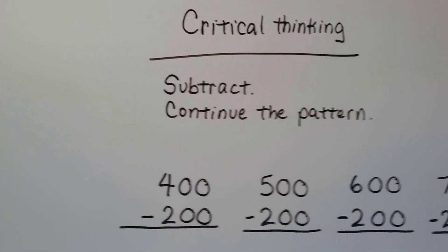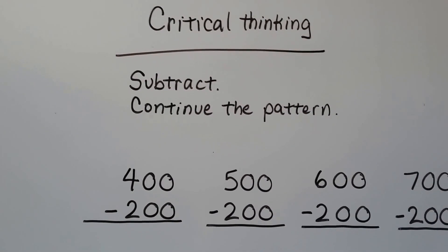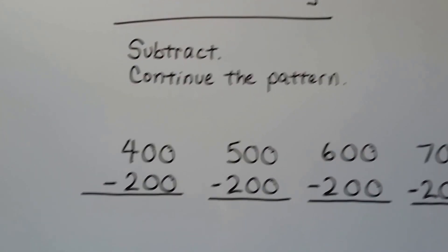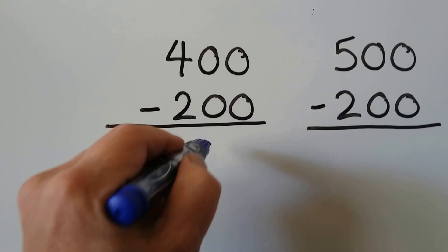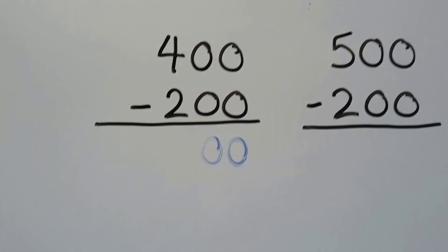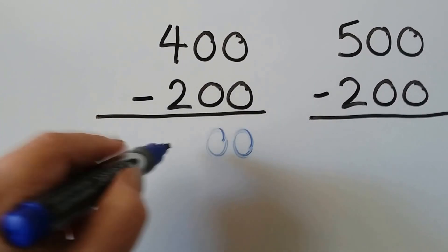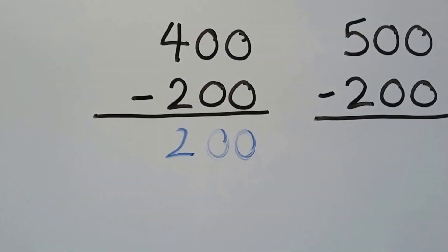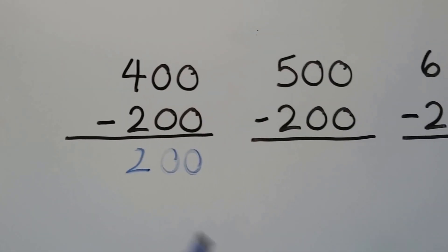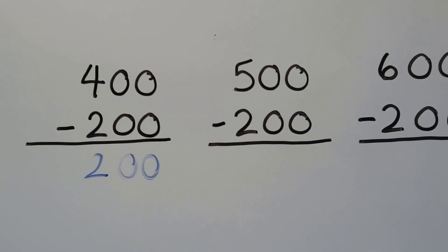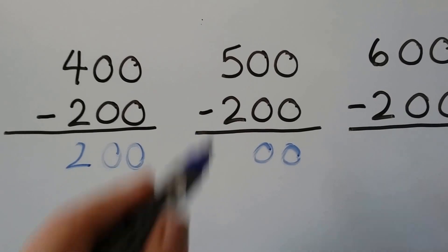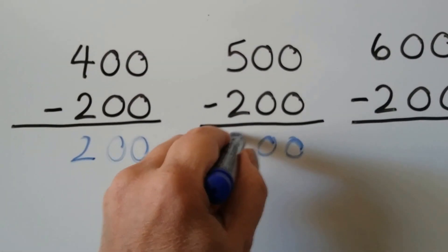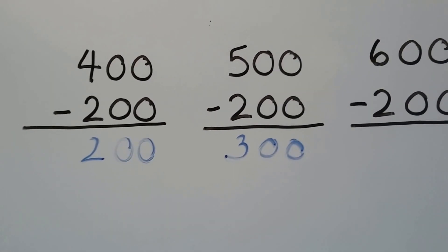Let's try some critical thinking. We need to subtract and continue the pattern. We know there are going to be zeros in the tens and ones place. Four minus two is two, so four hundred minus two hundred is two hundred. Next, five hundred minus two hundred: five minus two is three, so our answer is three hundred.